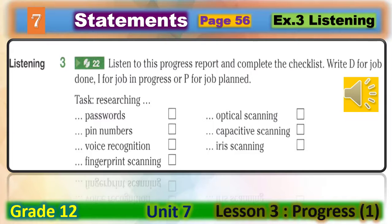Unit 7, Recording 22. Good morning, Bob. I'd like to have a chat about your security project. You've been looking into the different security methods. Yes, I'm trying to decide which security system would be best for our offices. How are you getting on? Fine — I'm making good progress. Have you made any decisions so far? Well, I've looked into passwords, PIN numbers, and voice recognition, and I've decided not to recommend any of those for various reasons. What are you looking at now? Right now, I'm looking into different methods of fingerprint scanning. There's optical scanning, which basically takes a photo of the finger, and there's something called capacitive scanning, which uses electrical current and a capacitor.